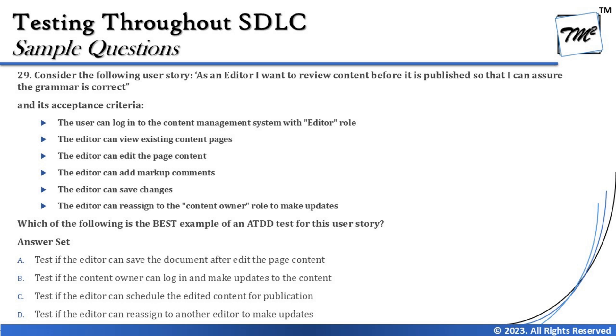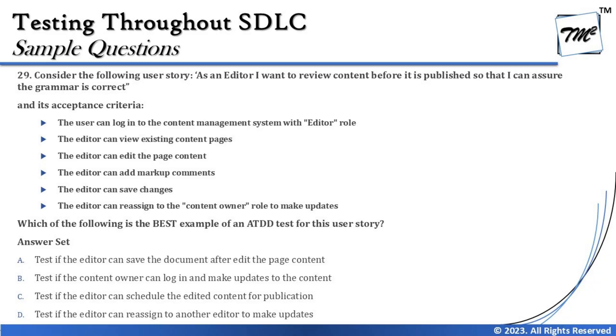In ATDD — Acceptance Test Driven Development — tests are derived directly from acceptance criteria. So we need to identify which of the given test options is most relevant to the listed acceptance criteria and which ones are not. Let's look at the options. Option A says: test if the editor can save the document after editing the page content — that directly corresponds to one of the acceptance criteria.